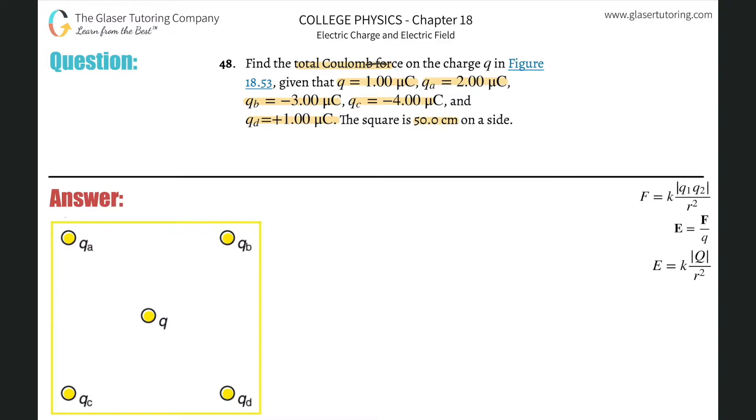So Q they told us was going to be a positive value. The A was also positive, so let's put A as positive. B is negative, so that's going to be a negative sign. C is also negative, and then D was positive.